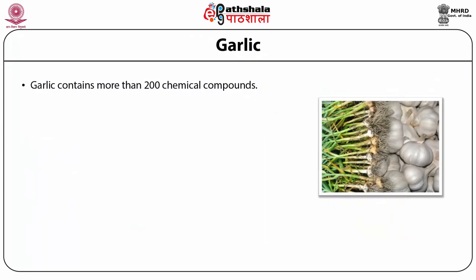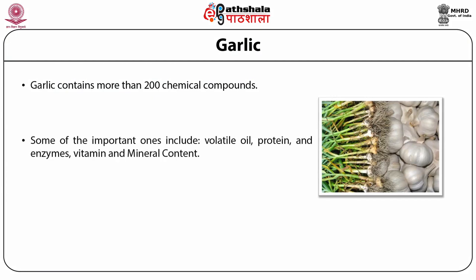Garlic contains more than 200 chemical compounds. Some of the important ones include volatile oil 0.1 to 0.36%, with sulfur-containing compounds allicin, alliin, and ajoene. Protein 16.8%, and enzymes: allinase, peroxidase, and myrosinase. Allicin is what gives garlic its antibiotic properties and is responsible for its strong odor. Garlic also contains citral, geraniol, linalool, alpha-phellandrene, and beta-phellandrene.